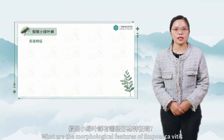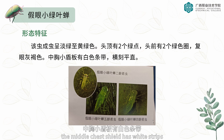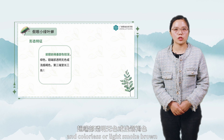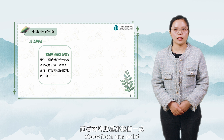What are the morphological features of Empoasca vitis? The adult is light green to yellowish green. There are two green spots on the top of the head and two green circles on the front. The compound eyes are grayish-brown. The middle chest shield has white stripes, and the horizontal carving is straight. The base of the front edge of the wing is dark green, while the wing tip is transparent, colorless, or light smoke-brown. The third end chamber is long and triangular, with anterior and posterior veins starting from one point.